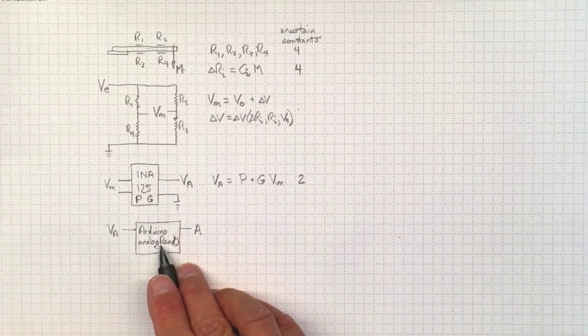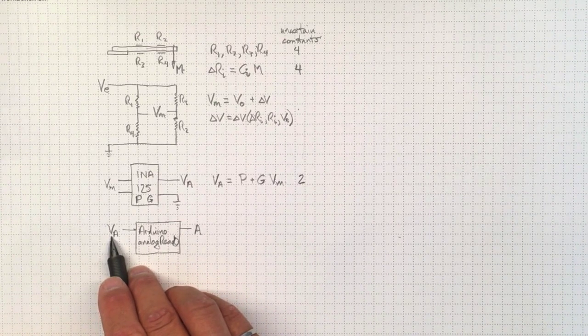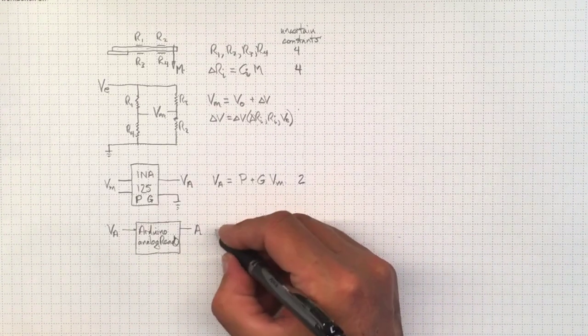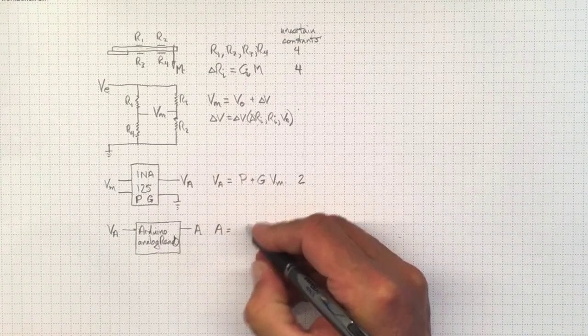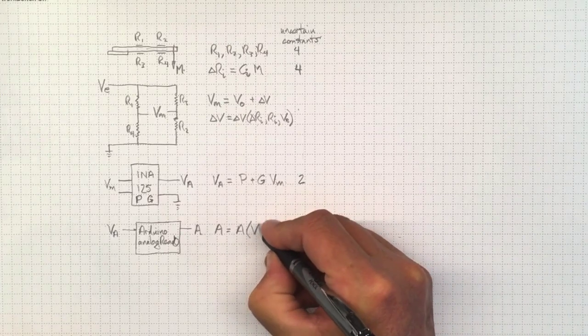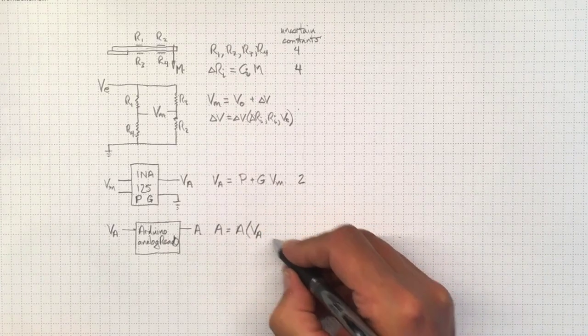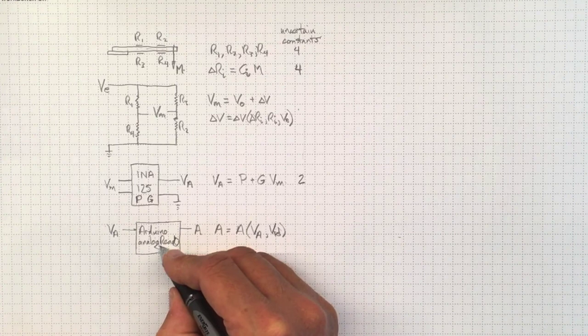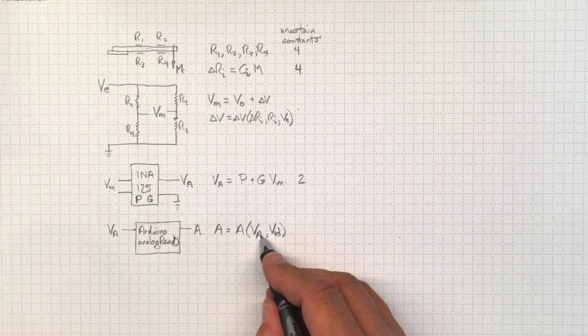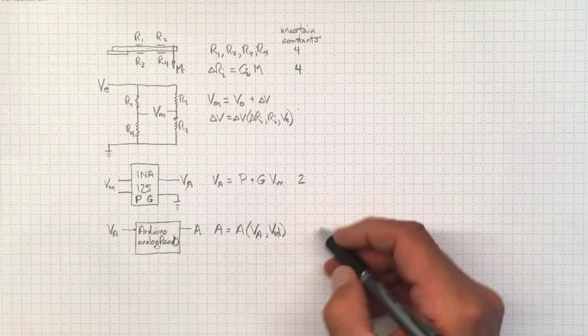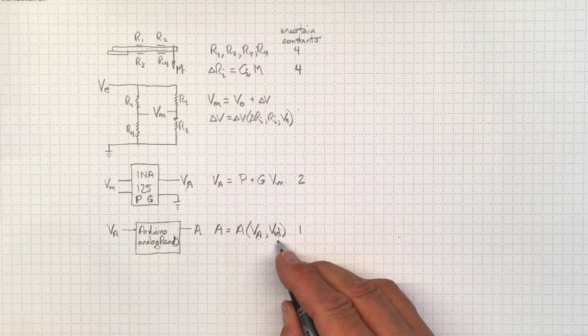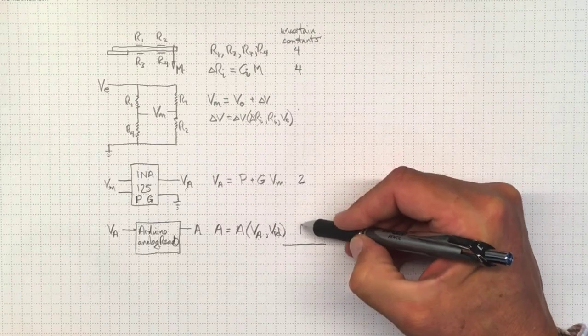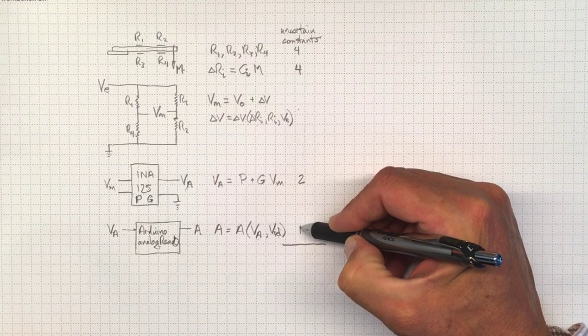And finally, we've already been working on figuring out how much uncertainty we've got in turning a voltage into an analog read value. So this analog read value is going to be some function of whatever that output voltage from the amplifier is, and whatever reference voltage we're using on our Arduino. So we've added that one we've already kept track of, but we've also got to keep track of the uncertainty in the reference voltage. Now, if I add that up, 4 and 4 is 8, and 2 is 10, and 1 is 11. That's getting pretty big. 11 constants.